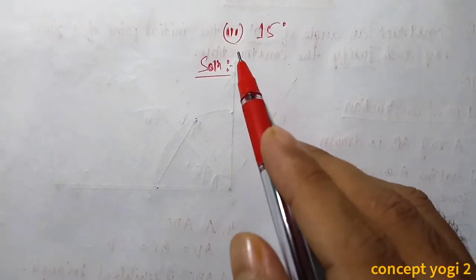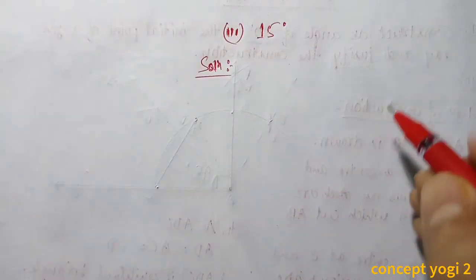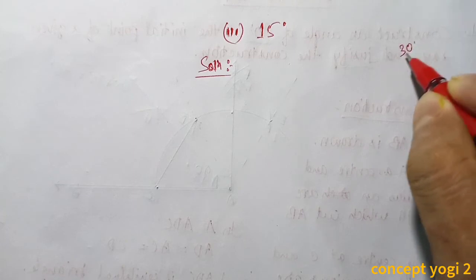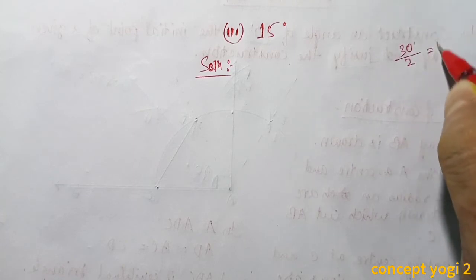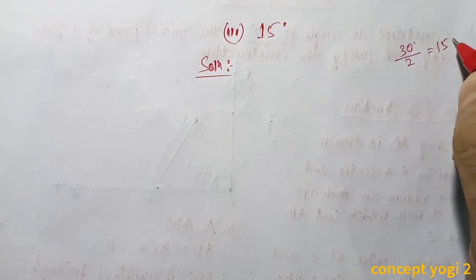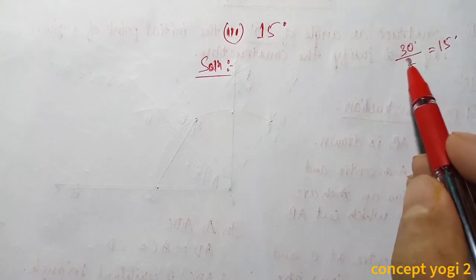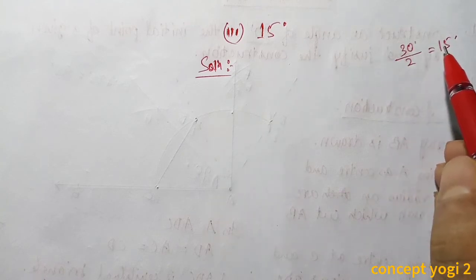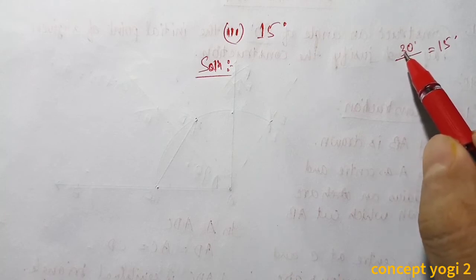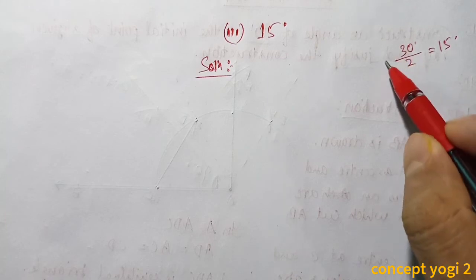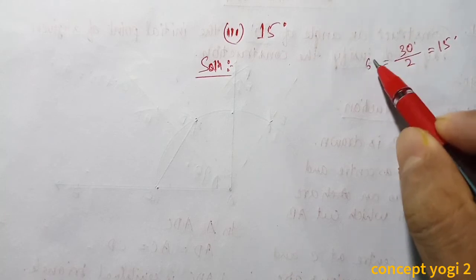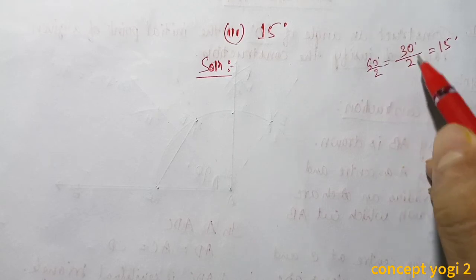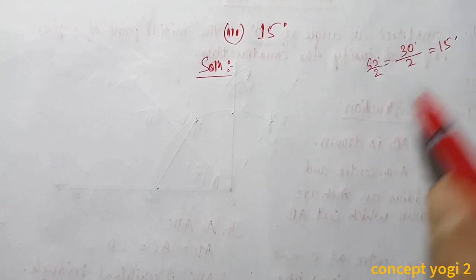Next, question number 3: 15 degrees. To get 15 degrees, bisect 30 degrees. But 30 degrees cannot be drawn directly — first draw 60 degrees, bisect to get 30 degrees, then bisect again to get 15 degrees.